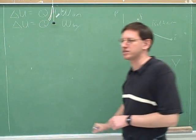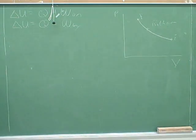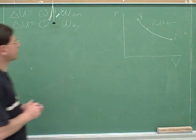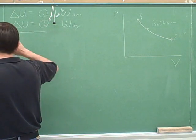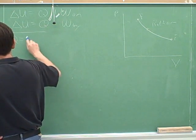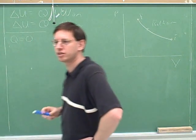All right, so now we've seen a bunch of special cases. We've seen constant volume, constant pressure, constant temperature, and we saw that a special case of constant temperature was cyclic. I think there's only one more special case, which is when there's zero heat exchange.